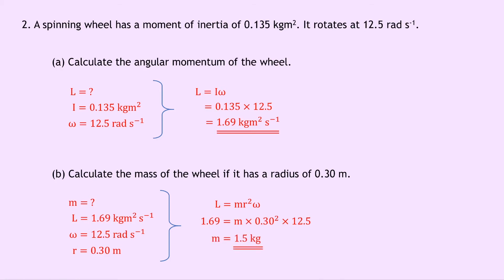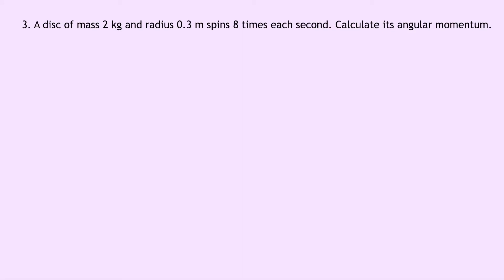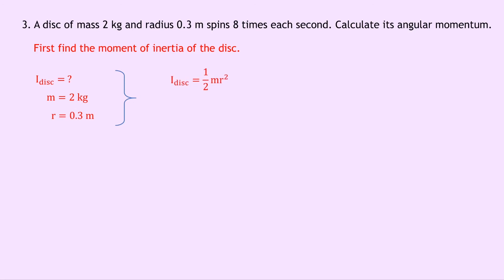Doing 0.3 squared times 12.5 and then dividing 1.69 by that answer gives you a mass of 1.5 kilograms, which sounds reasonable for the mass of a wheel. Lastly, question three says that a disc of mass 2 kilograms and radius 0.3 meters spins 8 times each second. Calculate its angular momentum. We first need to find the moment of inertia of the disc. The mass is 2 kilograms and the radius is 0.3 meters. Writing down the equation for the moment of inertia of a disc, we have I disc equals 0.5 MR squared, which you would get on the relationship sheet in the exam. Substituting in, we get 0.5 times 2 times 0.3 squared, which gives 0.09 kilogram meters squared.